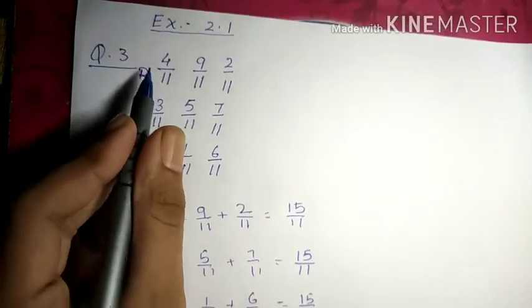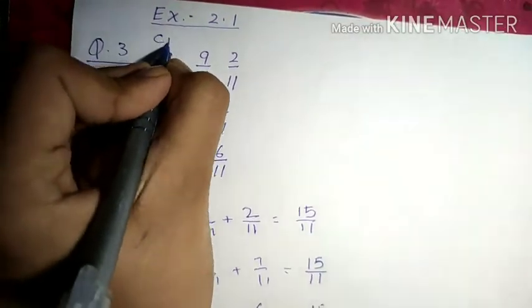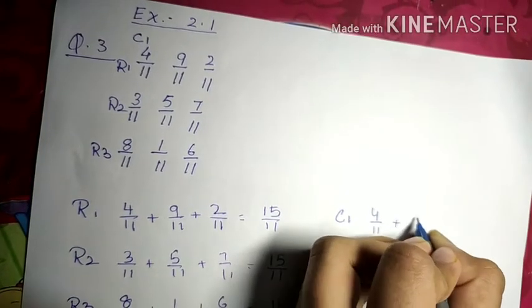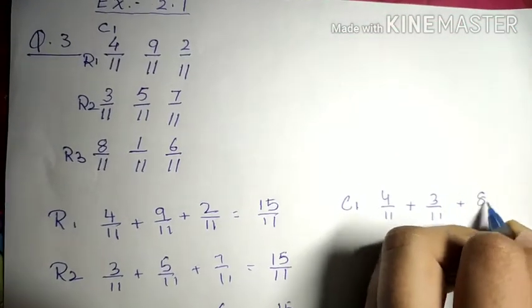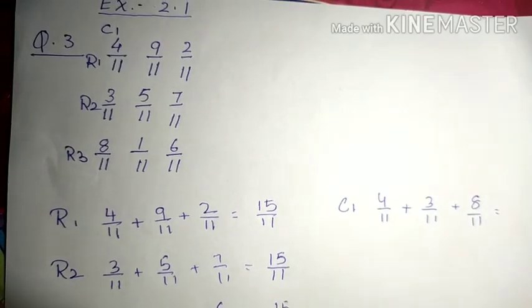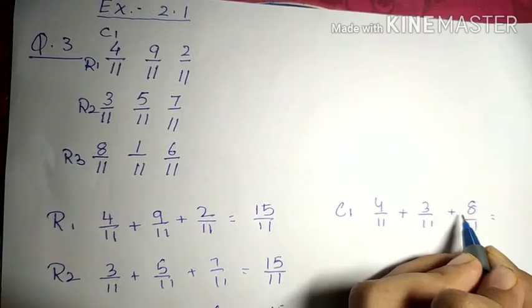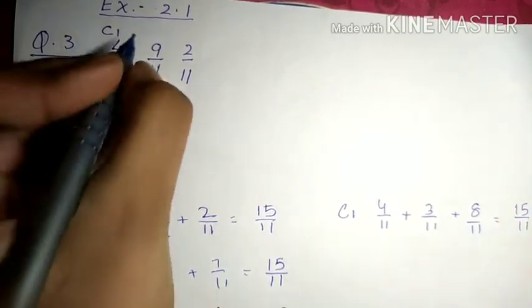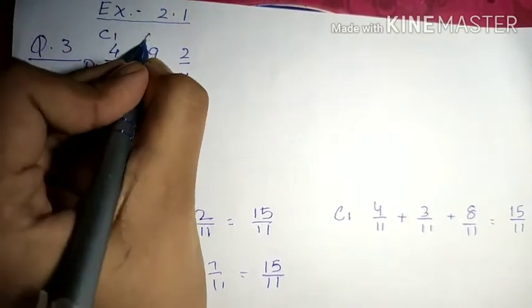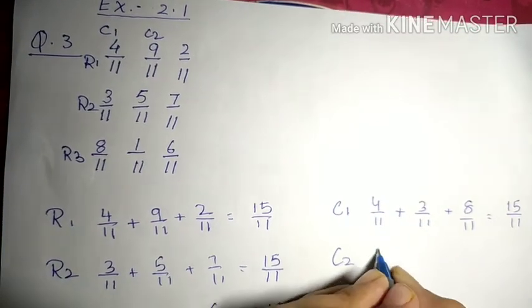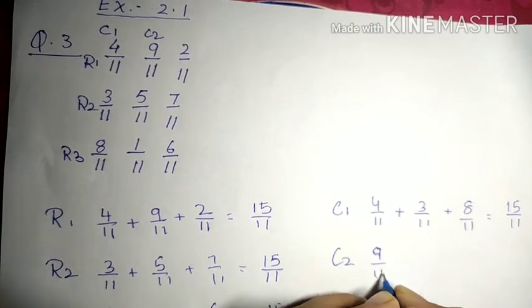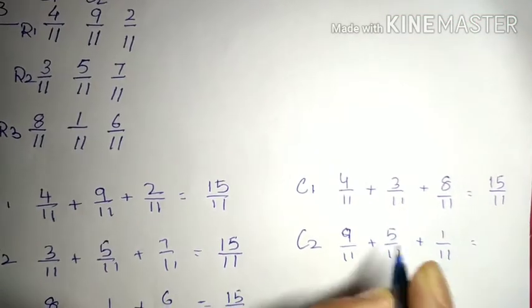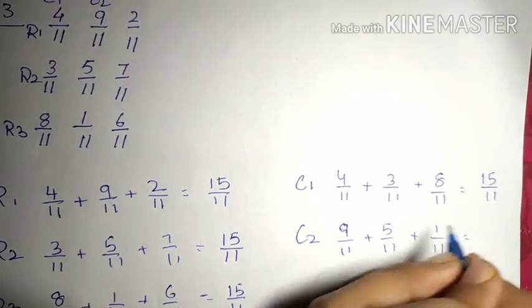Now let's find the column. So this is column 1. Column 1 is equal to 4/11 plus 3/11 plus 8/11. So 8 plus 3 is 11, 11 plus 4 is 15/11. Now this is column 2. Column 2 is equal to 9/11 plus 5/11 plus 1/11. So 9 plus 1 is 10, 10 plus 5 is 15. So 15/11.